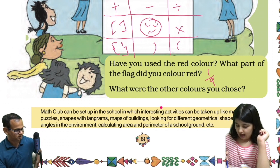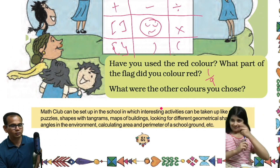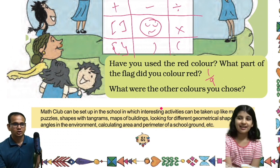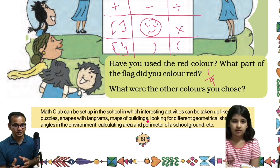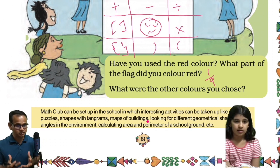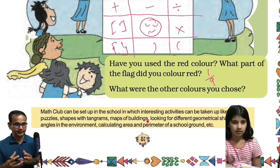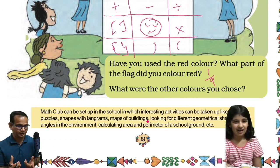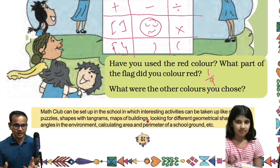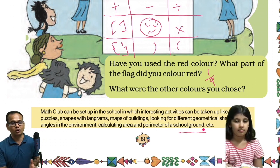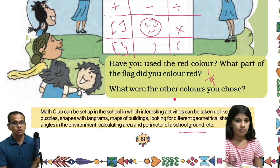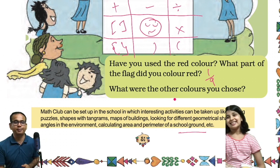The other colors chosen were golden, pink, and blue. A math club can be set up in school where interesting activities can be taken up, like making puzzles, tangrams, maps of buildings, looking for different geometrical shapes and angles in the environment, and calculating area and perimeter of a school ground.